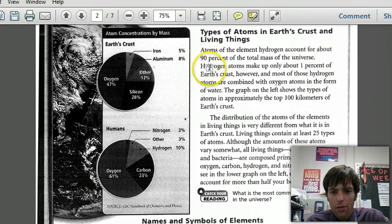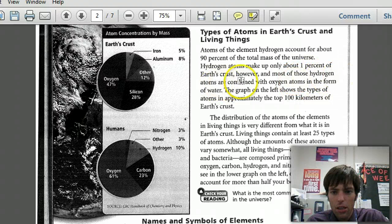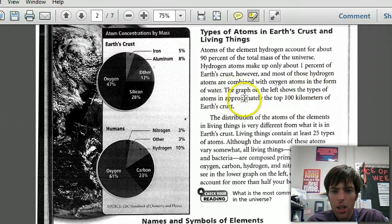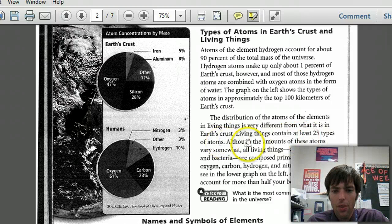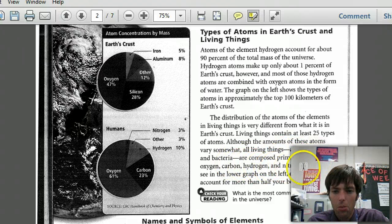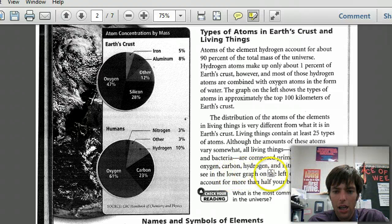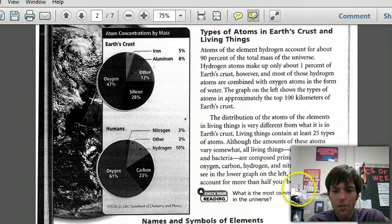Atoms of the element hydrogen account for about 90% of the total mass of the universe. Hydrogen atoms make up only about 1% of Earth's crust, however, and most of these hydrogen atoms are combined with oxygen atoms in the form of water. The graph on the left shows the types of atoms in approximately the top 100 kilometers of Earth's crust. The distribution of the atoms of the elements in living things is very different from what it is in Earth's crust. Living things contain at least 25 types of atoms. Although the amount of these atoms varies somewhat, all living things - animals, plants, and bacteria - are composed primarily of atoms of oxygen, carbon, hydrogen, and nitrogen. As you can see in the lower graph on the left, oxygen atoms account for more than half of your body's mass.